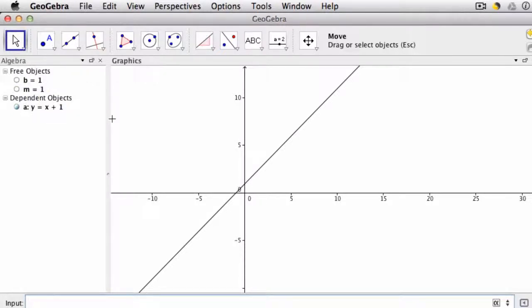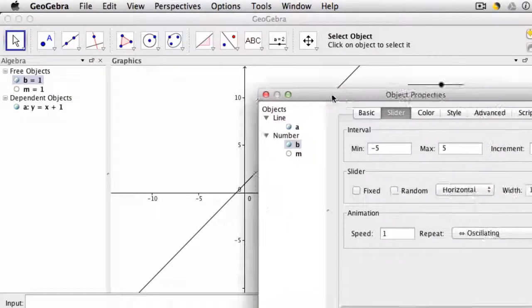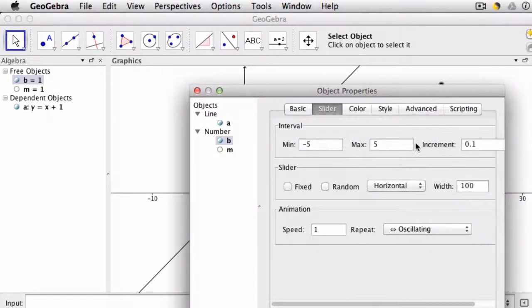Now some nice things we can do here is first of all create sliders for each of these variables. So if I click this right here for b, notice it gives me this little slider. I'm going to drag it over here and I'm going to edit the properties by clicking on the slider.